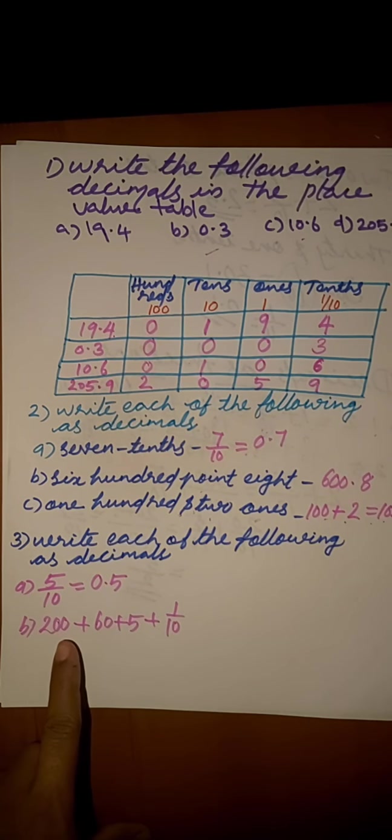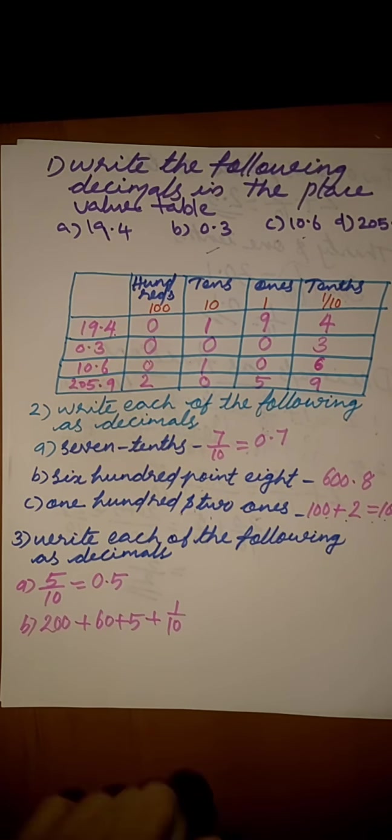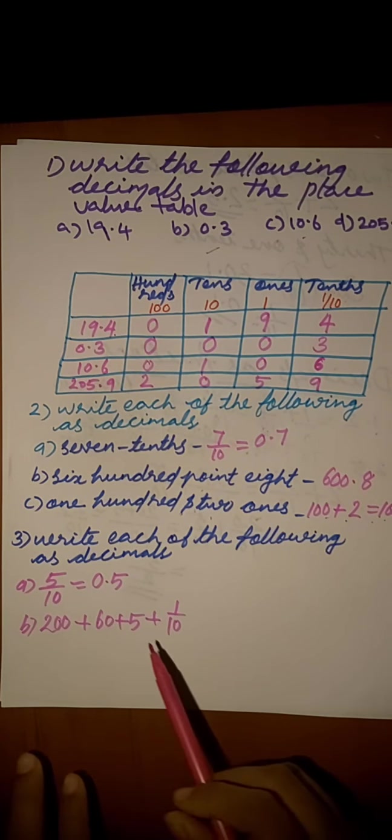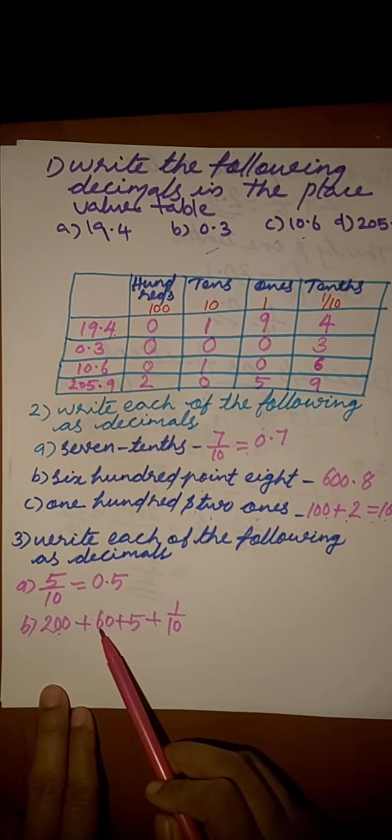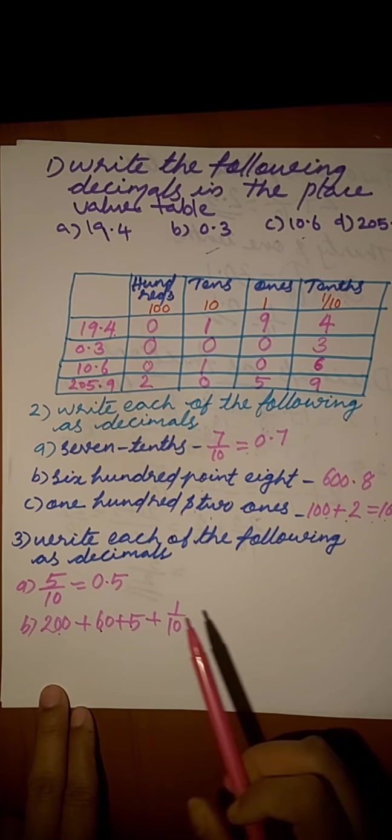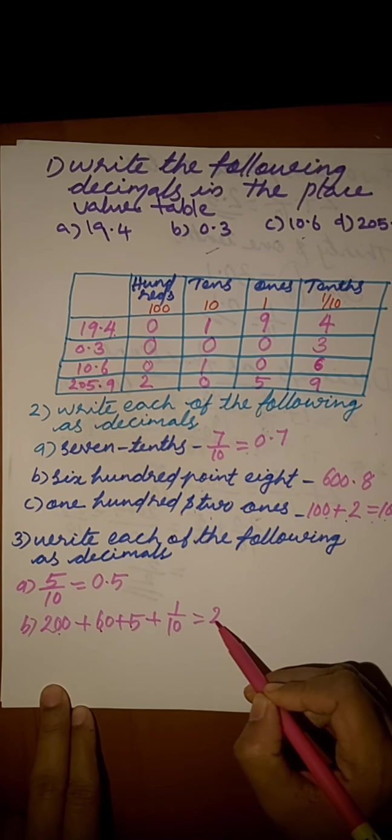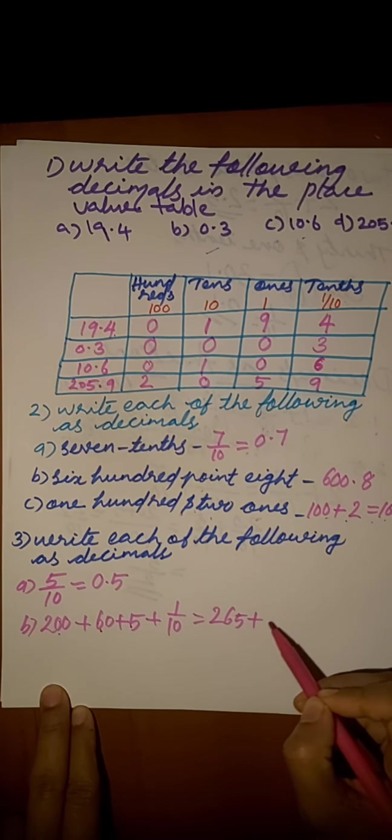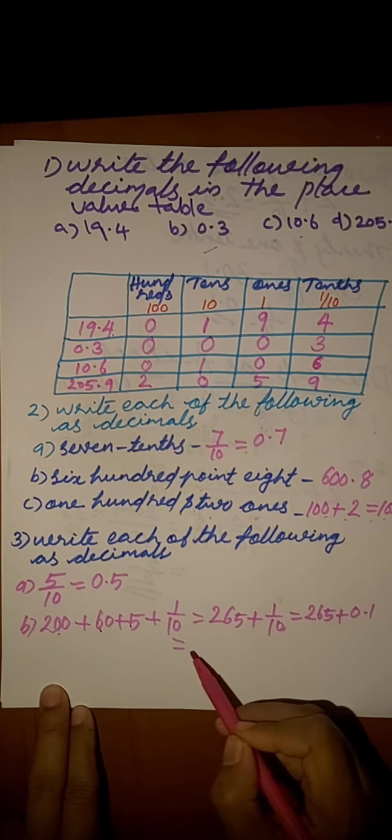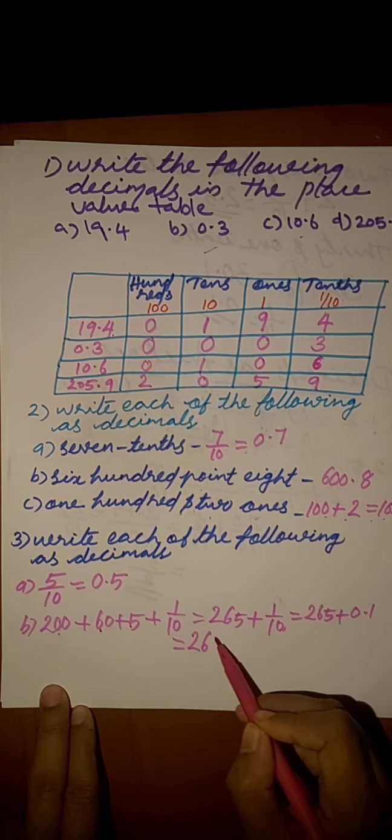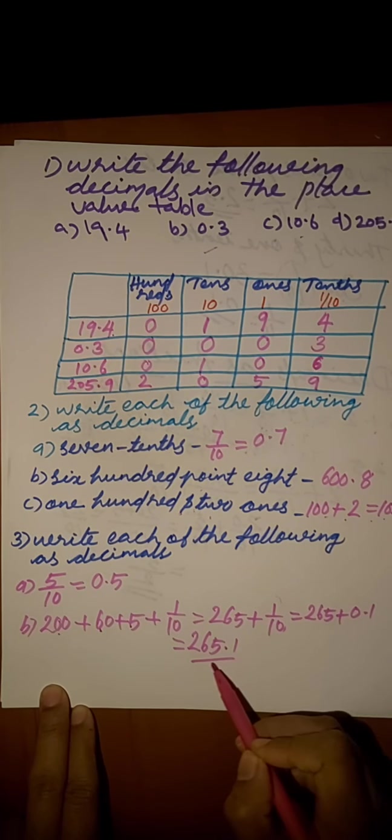Second question, 200 plus 60 plus 5 plus 1 by 10. First, we add these whole numbers. 200 plus 60, we get 260 plus 5 equals 265. Then 265 plus 1 by 10. Here, 1 by 10 means 265 plus 0.1. We get the answer 265.1.